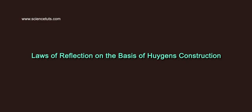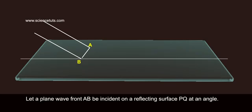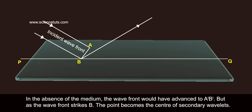Laws of Reflection on the Basis of Huygens Construction. Let a plane wave front AB be incident on a reflecting surface PQ at an angle. In the absence of the medium, the wave front would have advanced to AB'.